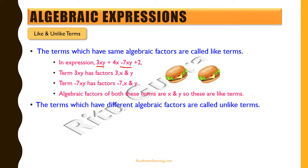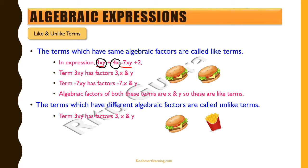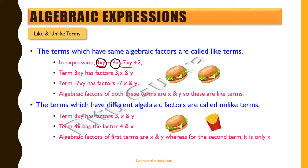Now let's see what unlike terms are. Terms which have different algebraic factors are called unlike terms. They may have one or two common algebraic factors, but all the factors are not the same. For example, taking the terms 3xy and 4x from the same expression: 3xy has factors x and y, while 4x has only x. Since the algebraic factors are different — one has x and y, the other has only x — these are unlike terms, even though they share a common factor x.